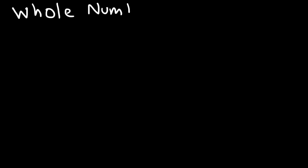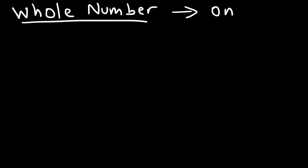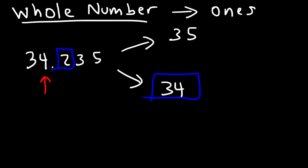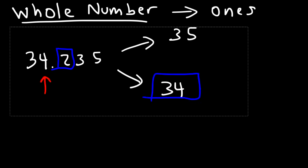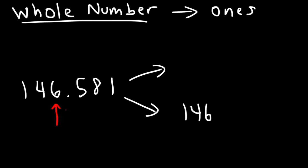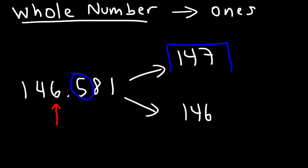Now we're going to focus on rounding to the nearest whole number. If you get a problem like this, it's the same as rounding to the ones digit. So let's say we have the number 34.235 — it's either going to go down to 34 or go up to 35. Looking at the next number, 2 — that's less than 5, so we're going to round down to 34. Now let's consider 146.581 rounded to the nearest whole number. So it's either going to be 146 or 147. The next number is 5 or more, which means we need to round up to 147.